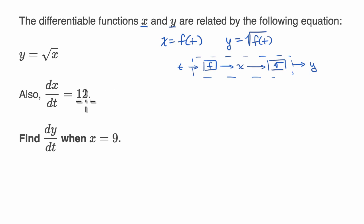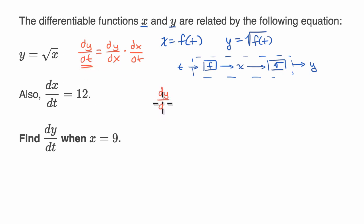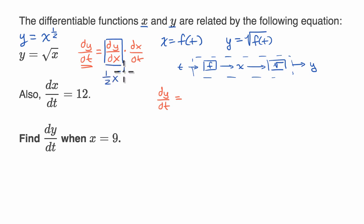Now let's actually answer the question. We apply the chain rule, which tells us that the derivative of y with respect to t equals the derivative of y with respect to x, times the derivative of x with respect to t. In this situation, y equals the principal root of x, which we can write as x to the one-half power. Using the power rule, the derivative of y with respect to x is one-half x to the negative one-half. So dy/dt equals one-half x to the negative one-half, times dx/dt.